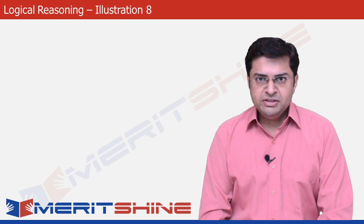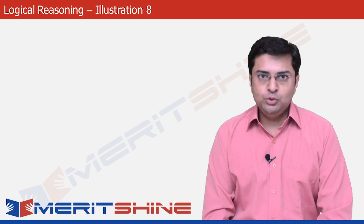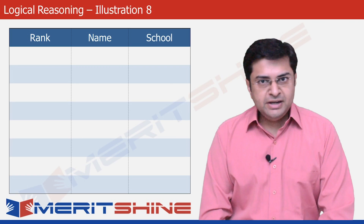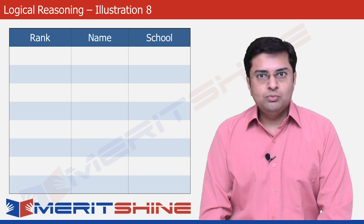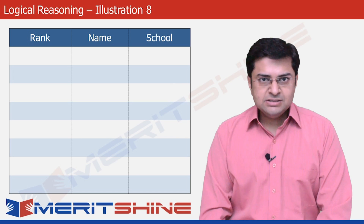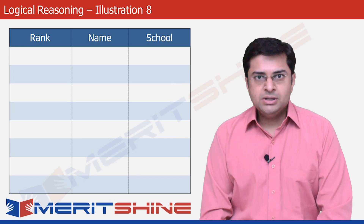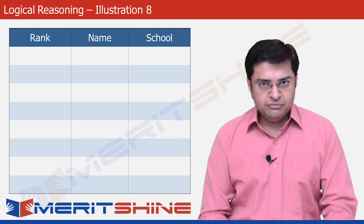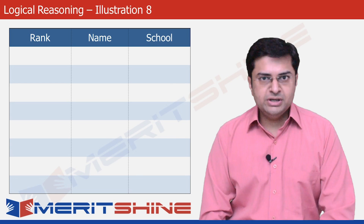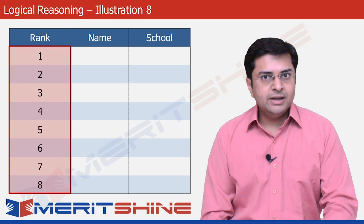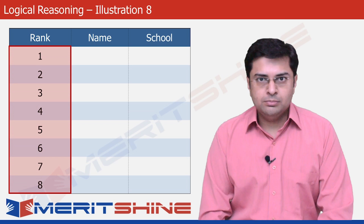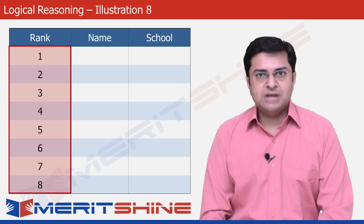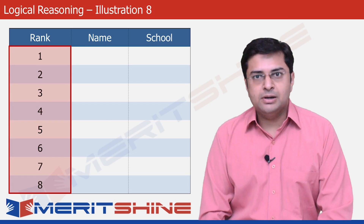The first step to solving this problem is to create a table. The three columns will contain the ranks, names, and schools in that order. The first thing we do is put ranks 1 through 8 in the first column. Now let's move to the statements to start filling the table.